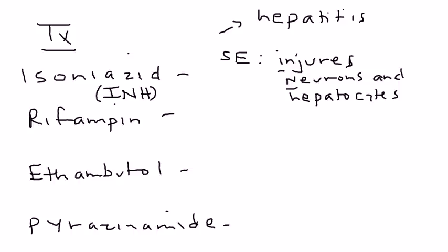And injures neurons, what you mean by that is that it can cause peripheral neuropathy. The reason is because it can cause a deficiency of vitamin B6, and vitamin B6 is also known as pyridoxine.